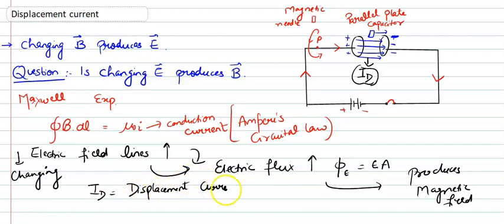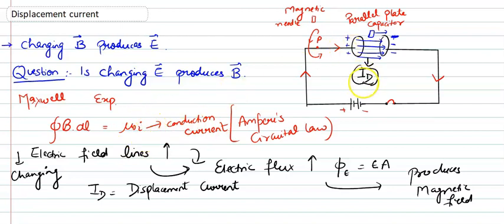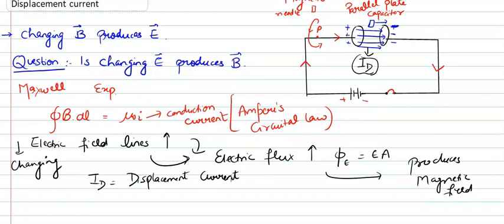Why is it called displacement current? Displacement means you need to displace something with something else. Here, we have displaced the conduction current with another current, and that is called displacement current. So the concept of displacement current arises from this substitution.